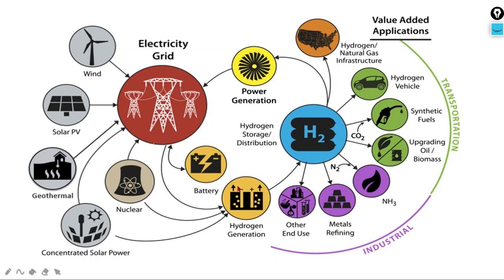This is the mind map of hydrogen economy, showing how hydrogen can be used in different areas of fuel consumption. So students, here we close unit number 9, that is hydrogen. You have to prepare this hydrogen unit for future and for competitive exams as well. Thank you for being with me.